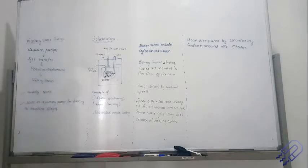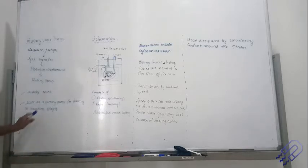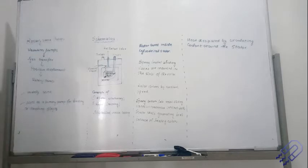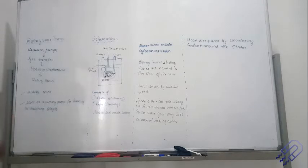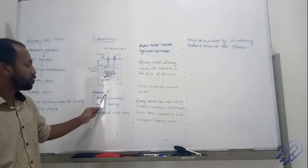The rotary pump is widely used and is used as a primary pump for backing or roughing stages. Roughing means you are going to get an approximate or a rough value of the vacuum — it is not going to be a very high vacuum. There is a certain limit to it; after that limit, not everything can be dragged out, only a part of it.